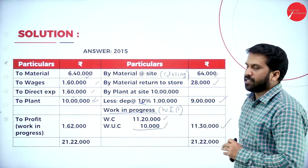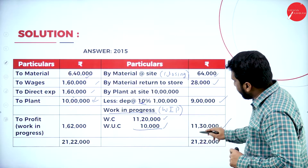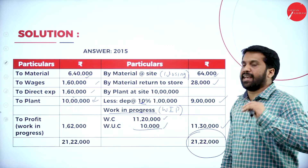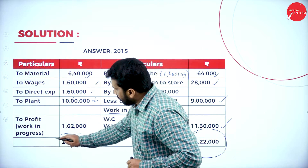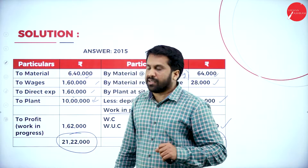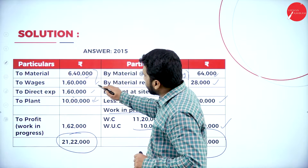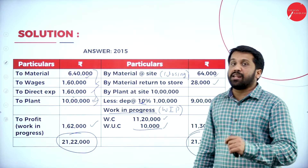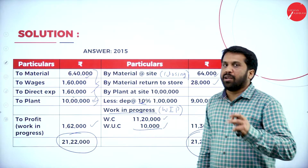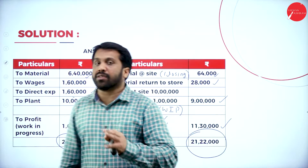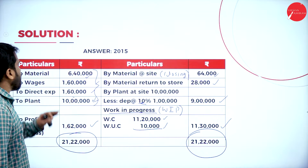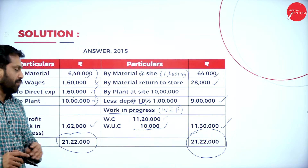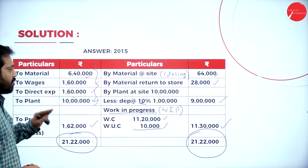Now you have to see which side is more. Your credit side is 21,22,000, which is higher. From this, you minus all the debit items and you get 1,62,000. This is your 2015 result — notional profit of 1,62,000.